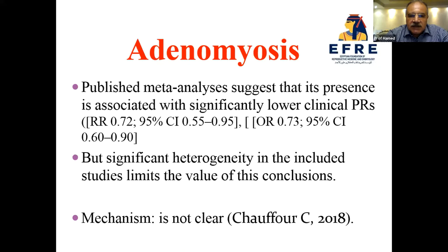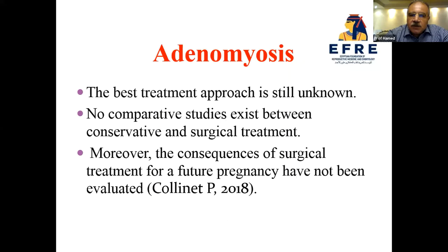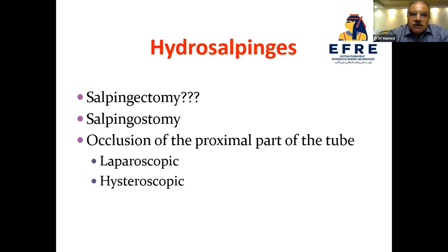Regarding adenomyosis, published data suggests its presence is associated with significantly lower clinical pregnancy rates, but significant heterogeneity limits this conclusion. The mechanism remains unclear, the best treatment approach is unknown, no comparative study exists between conservative and surgical treatment, and the consequences of surgical treatment for future pregnancy have not been evaluated. For hydrosalpinx, it must be treated — whether by salpingectomy, salpingostomy, disconnection, or occlusion, laparoscopically or hysteroscopically.